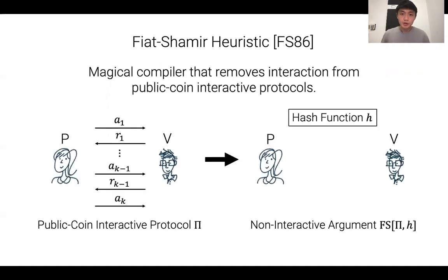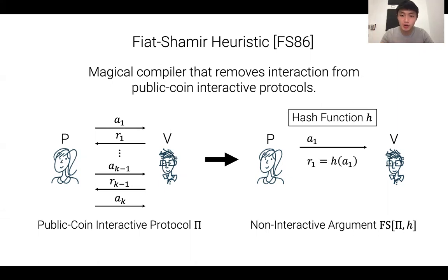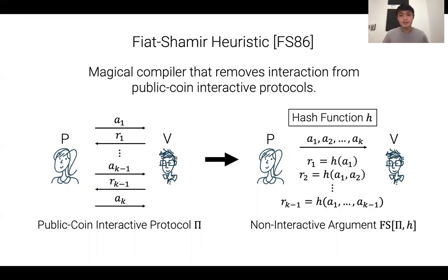Here's how it works. The prover and verifier agree on some Fiat-Shamir hash function H. Instead of having a back-and-forth conversation, the prover simulates the conversation: every time the verifier is supposed to send a random message, the prover computes that message by applying H to the transcript so far. The prover computes the first message a_1, then computes H(a_1) for the next challenge, responds with a_2, then computes H(a_1, a_2), and so on. The prover sends all the a_i's to the verifier, who recomputes all the challenges by applying the hash to the transcript, and decides to accept or reject just as the interactive verifier would.